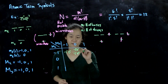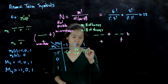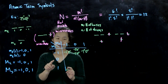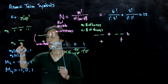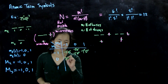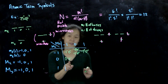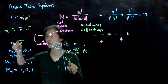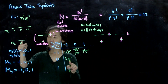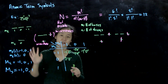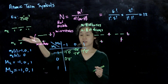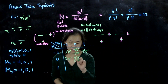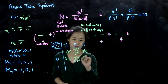For M_L = minus 1, M_S = 1: we have (minus 1+, 0+), both spin up — 1 microstate. For M_L = 0, M_S = minus 1: (0−, 0−). These are in different orbitals (p and s), so this doesn't violate Pauli exclusion — 1 microstate. For M_L = 0, M_S = 0: two options, (0+, 0−) or (0−, 0+) — 2 microstates. For M_L = 0, M_S = 1: (0+, 0+) — 1 microstate.